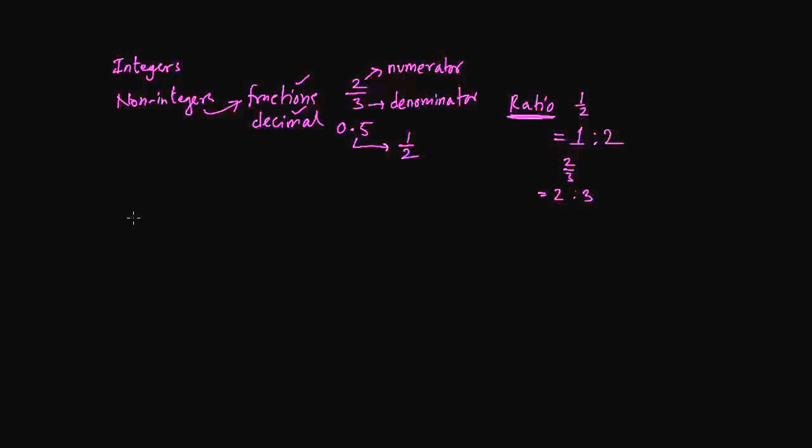Now the next category of number is rational number. If you notice, the first four letters, RATIO, RATIONAL. We call it RATIONAL NUMBERS. Rational numbers are numbers that can be expressed as an integer or a ratio of integers.